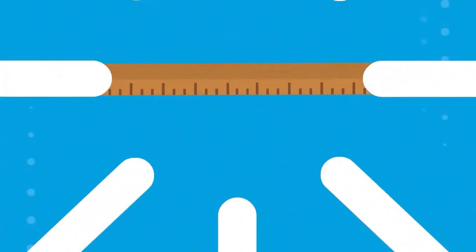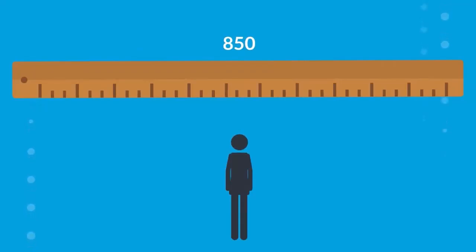Check out this example. Let's say we have a student with a scale score of 850 and the standard error of measurement of 30. This means the student's score would likely fall within 30 scale score points below 850 and 30 points above 850, so between 820 and 880, if the student were to test again in the same way and on the same day.